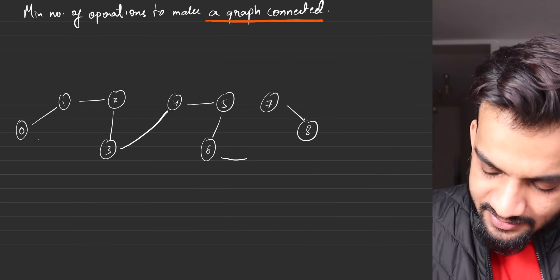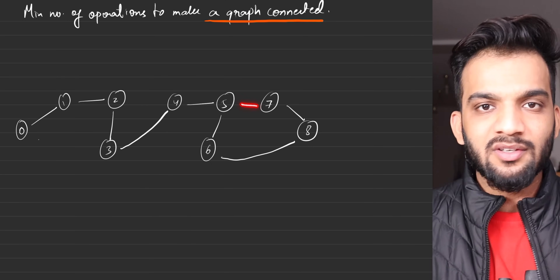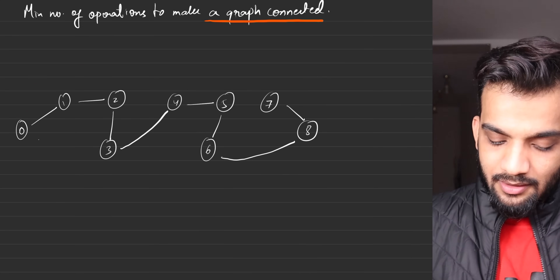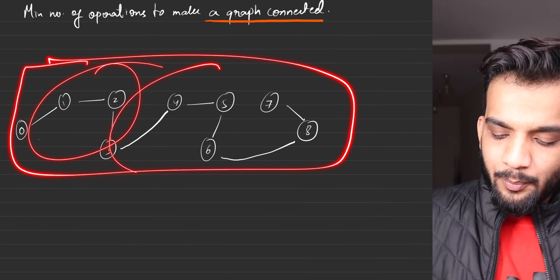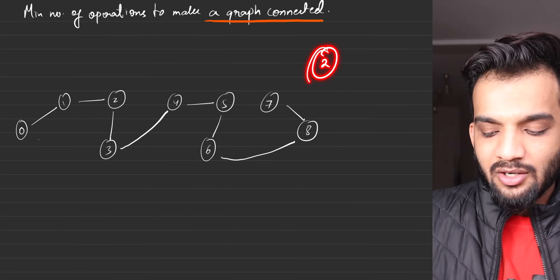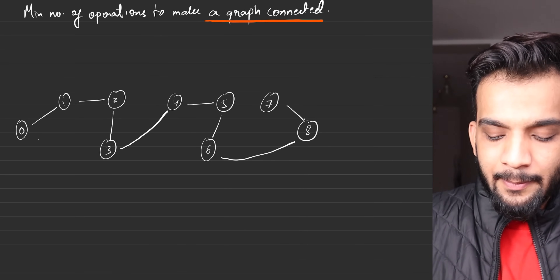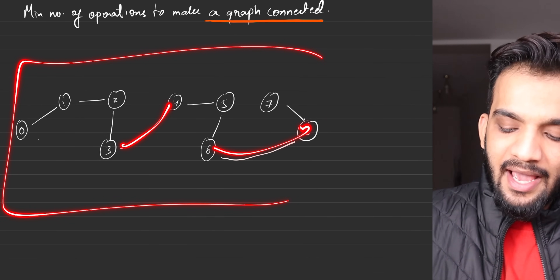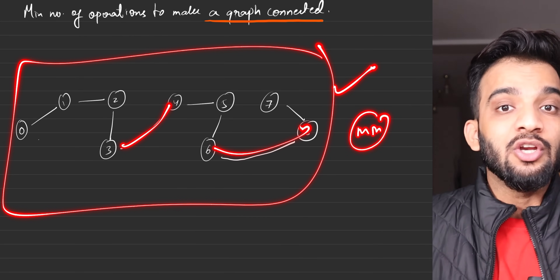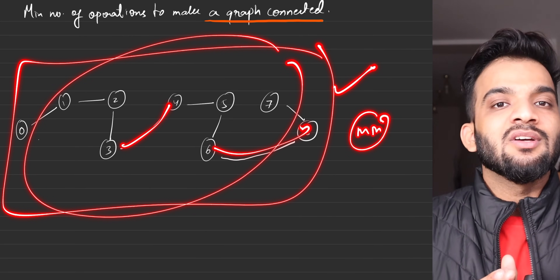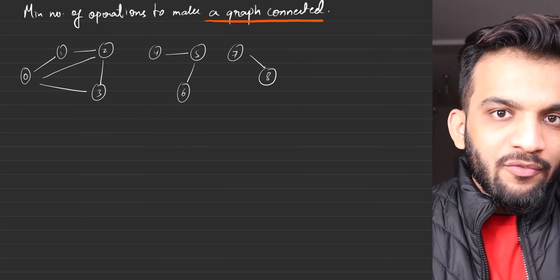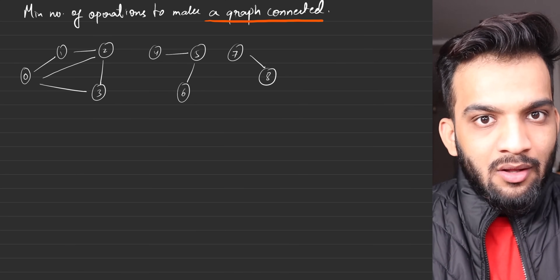What if I go ahead and take out one more edge? I'll take that edge and maybe connect six and eight — I could have connected five and seven as well. Now, even if I removed this, it is still connected. And it ended up connecting all three components. Thereby, I needed two edges which I had to remove and plant somewhere so that the entire graph was connected.